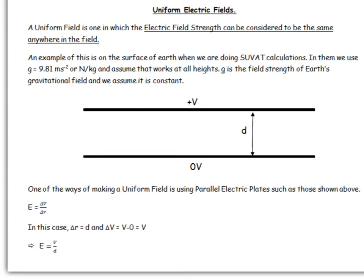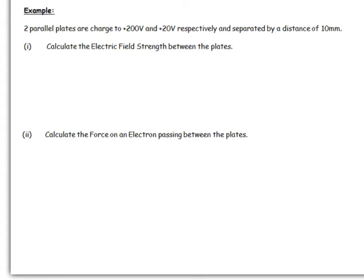Let's look at an example which is slightly more complicated than that. We've got two parallel plates, one charged to 200 volts and the other to 20 volts, separated by a distance of 10 millimeters. Let's quickly sketch what this looks like: we've got 200 volts and 20 volts, and they're both positive, with this distance here of 10 millimeters.